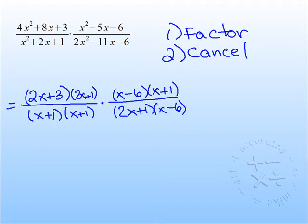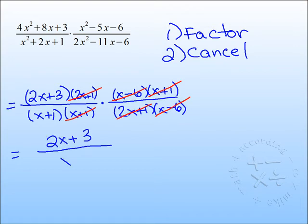notice diagonally we can cancel one of these x plus 1s with this x plus 1 in this numerator. Up and down, there goes these x minus 6s. And also diagonally, 2x plus 1 and a 2x plus 1. Please be careful and write neatly while you cancel. You don't accidentally want to draw a line through something that is still part of the answer. Notice we're left with the factor of 2x plus 3 over x plus 1.